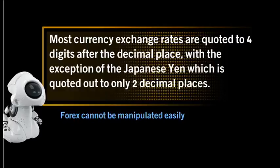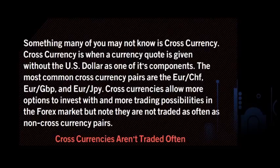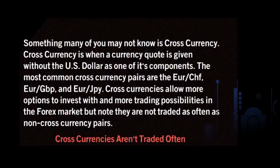Most currency exchange rates are quoted up to four digits after the decimal place, with the exception of the Japanese yen, which is quoted out to only two decimal places. Cross currency is when a currency quote is given without the US dollar as one of its main components. The most common cross currency pairs are the Euro/Swiss franc, the Euro/British pound, and the Euro/Japanese yen. Cross currencies allow more options to invest with and more trading possibilities in the forex market, but they are not traded as often as pairs that include the US dollar.